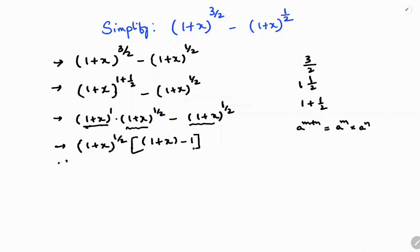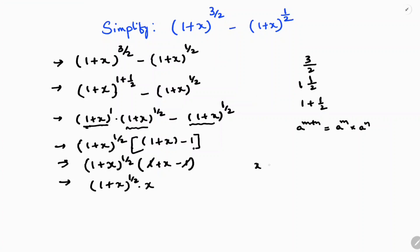Simplifying further, (1 + x) minus 1 — the 1 and minus 1 cancel. So the final answer is (1 + x) whole power 1 by 2 times x, or x into (1 + x) whole power 1 by 2. This is the answer.